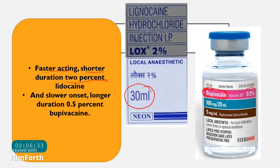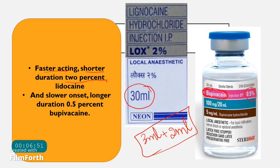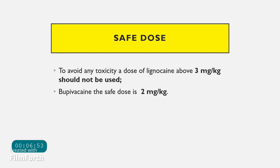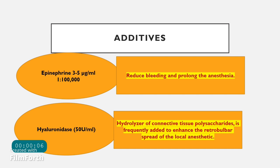Bupivacaine is added to lignocaine to prolong its action. In the syringe, 3 ml of lignocaine is taken and 2 ml of bupivacaine is added. Regarding safe doses to avoid toxicity, lignocaine should not exceed 3 mg/kg, and bupivacaine should not exceed 2 mg/kg.